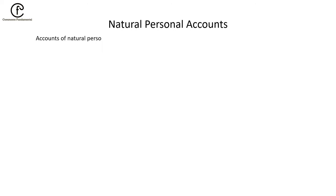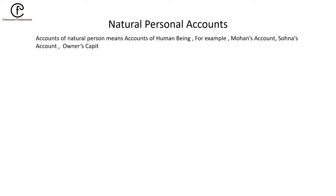As the name suggests, Natural Person Accounts belong to human beings. Accounts of natural persons means accounts of human beings. For example, Mohan's Account, Sona's Account, Owner's Capital Account, Owner's Drawing Account, Debtor's Account, and Creditor's Account. Here, the owner is a person, so Capital Account and Drawing Account fall under Natural Personal Accounts.